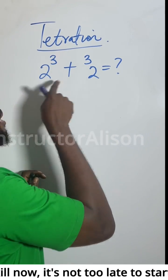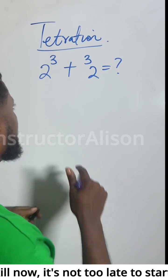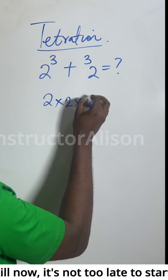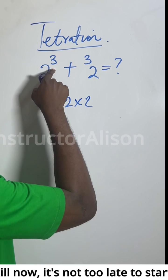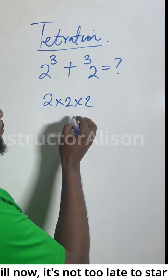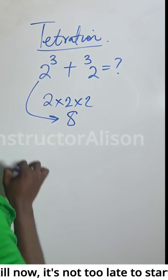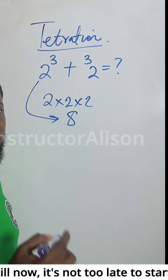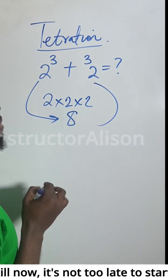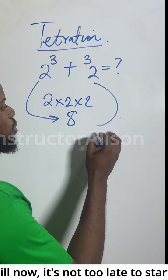I want to run this one because it doesn't work the same way. You would be asked: if it's to the power three, isn't it just two times two times two? Then two times two is four, four times two is eight. But if you say that, I won't give you eight. What about this one? Two tetration three means something different.